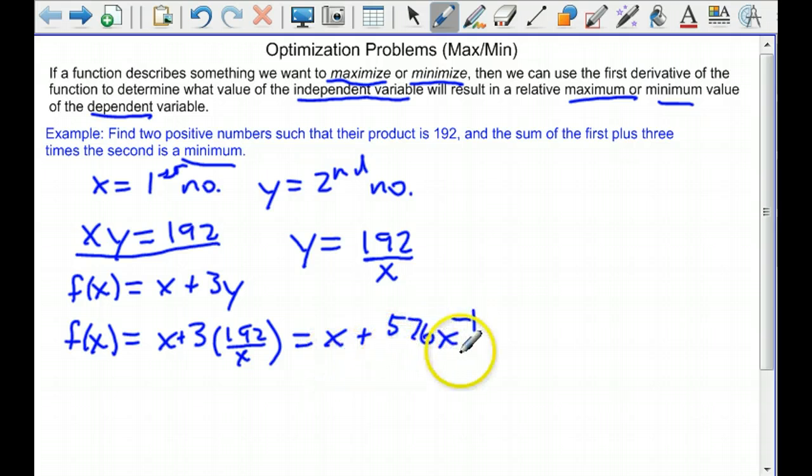This is the function we want to minimize. So I'm going to take the derivative. The derivative of x is 1. And the derivative of 576 x to the negative 1 is negative 576 x to the negative 2.